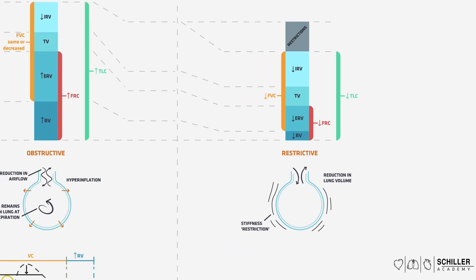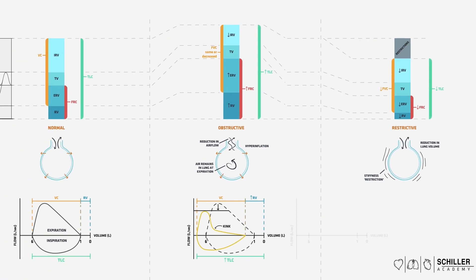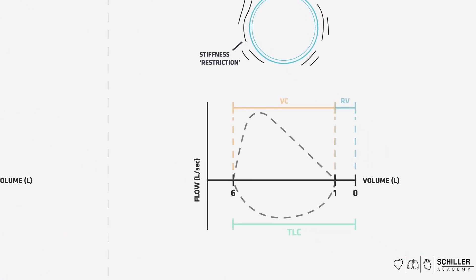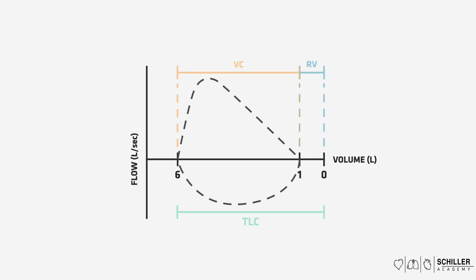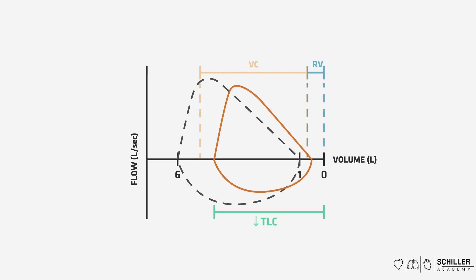Let's look at the forced vital capacity using a graph again. The dotted black line represents a normal forced vital capacity. Here in brown, the pattern of the forced vital capacity seen in restrictive lung diseases is shown. As you can see, it is shifted to the right. The reason for this shift is because the total lung capacity is reduced due to the restrictions, the residual volume is reduced, and the vital capacity or forced vital capacity is reduced too.